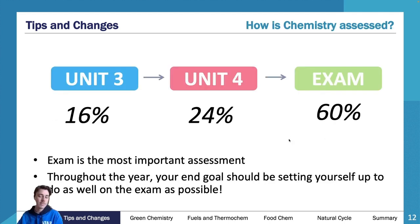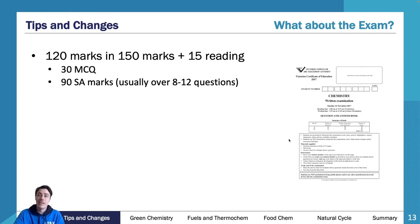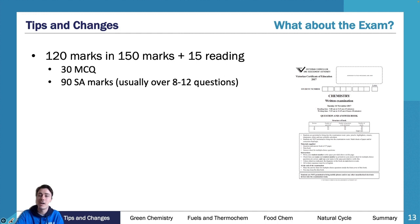How is chemistry assessed? Unit three is worth 16%, unit four is worth 24% because they are bigger, and the exam is worth 60% — the exam is the majority of the year. It's 120 marks in 150 minutes, plus a 15-minute reading time, so I'd argue it's effectively 165 minutes.